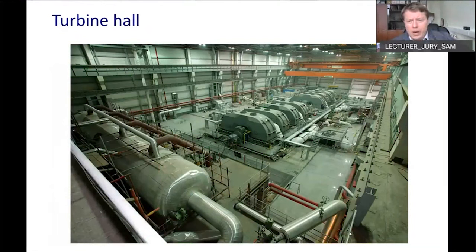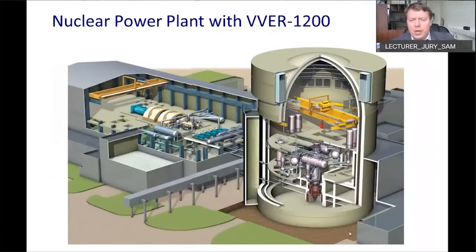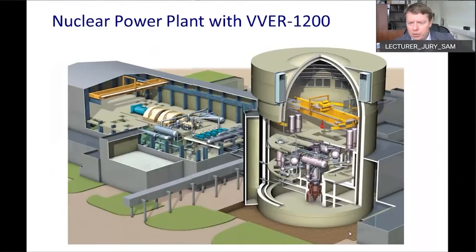Here you can see a real picture from one of the nuclear power plants in Russia, showing the basic equipment and layout of the VVER-1200 nuclear power plant. In this picture you can see the reactor building, the turbine building with the turbine, and the generator.